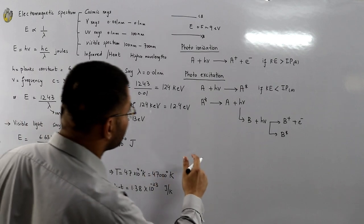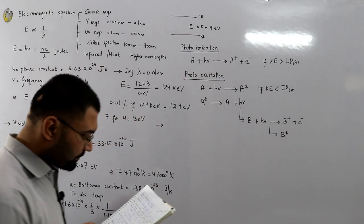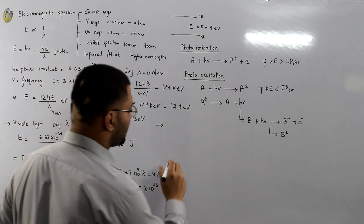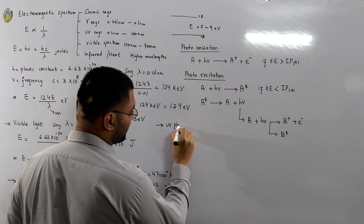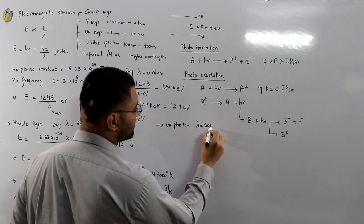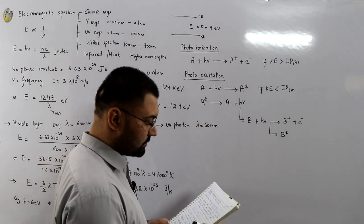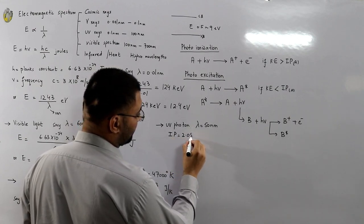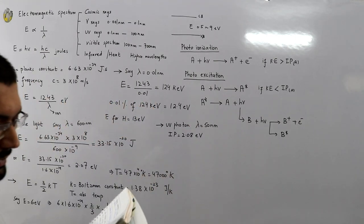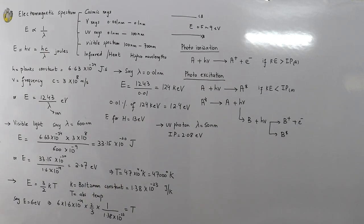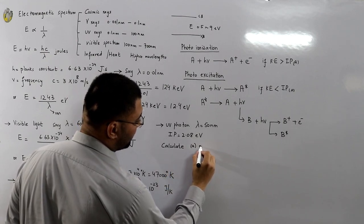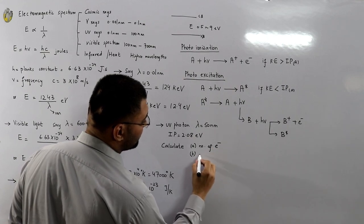An ultraviolet photon having a wavelength of 50 nanometers is incident on an insulation having an ionization potential of 2.08 electron volts. Calculate: (a) the number of electrons that can be formed, and (b) the initial velocity of the liberated electrons.